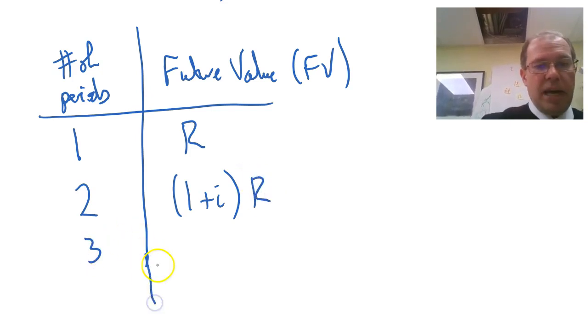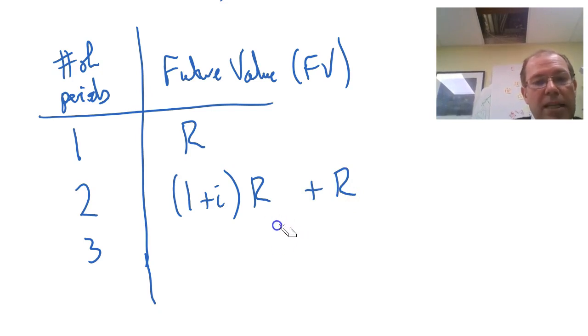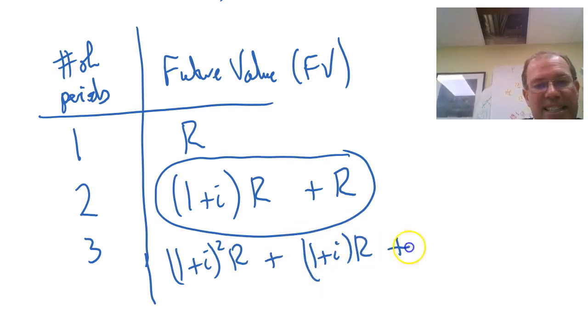After three periods, I get interest on everything there. I forgot to add on my period payment, R, my regular payment. And so now I need to take the interest of all of this. So it's going to be 1 plus i, my multiplying factor times all of that. So that would be 1 plus i all squared times R plus 1 plus i times R. And don't forget this time to add my regular payment.